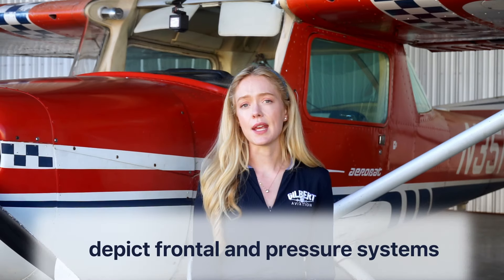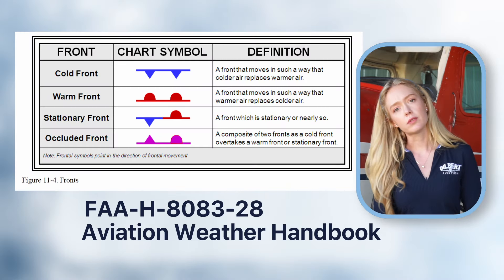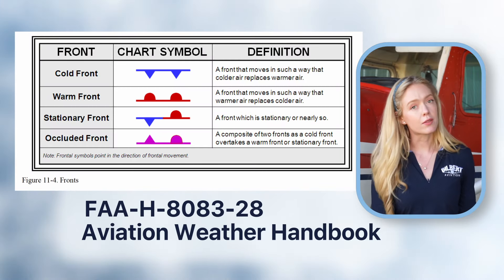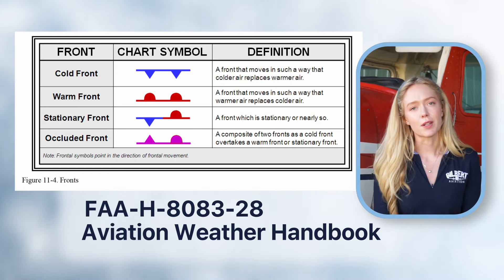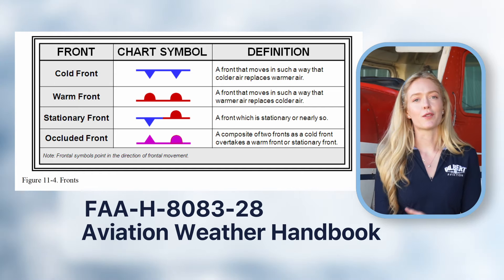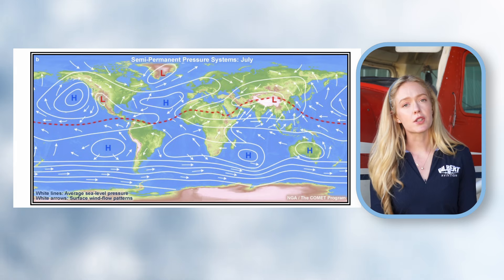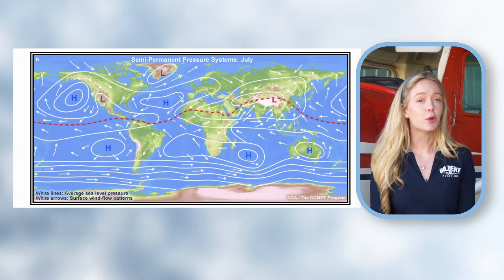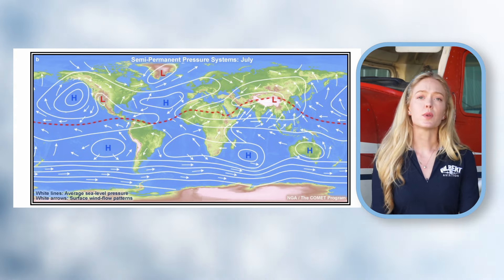These charts provide depictions of frontal systems and pressure systems. Frontal systems include cold fronts, warm fronts, stationary fronts, occluded fronts, and all the lesser versions of those which are called frontolysis. Pressure systems include high pressure systems, low pressure, and troughs. We also get isobars which depict pressure gradients.